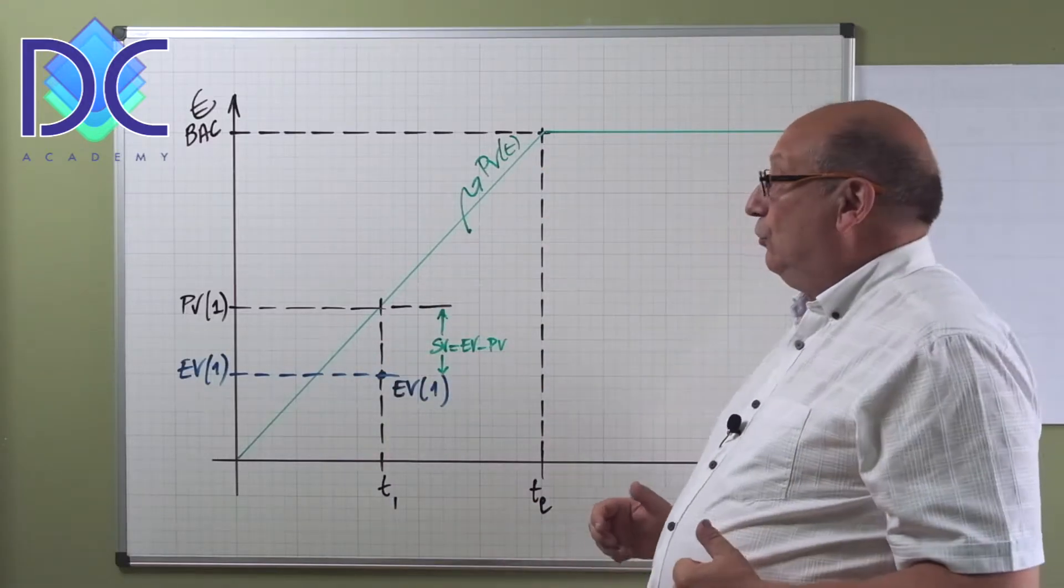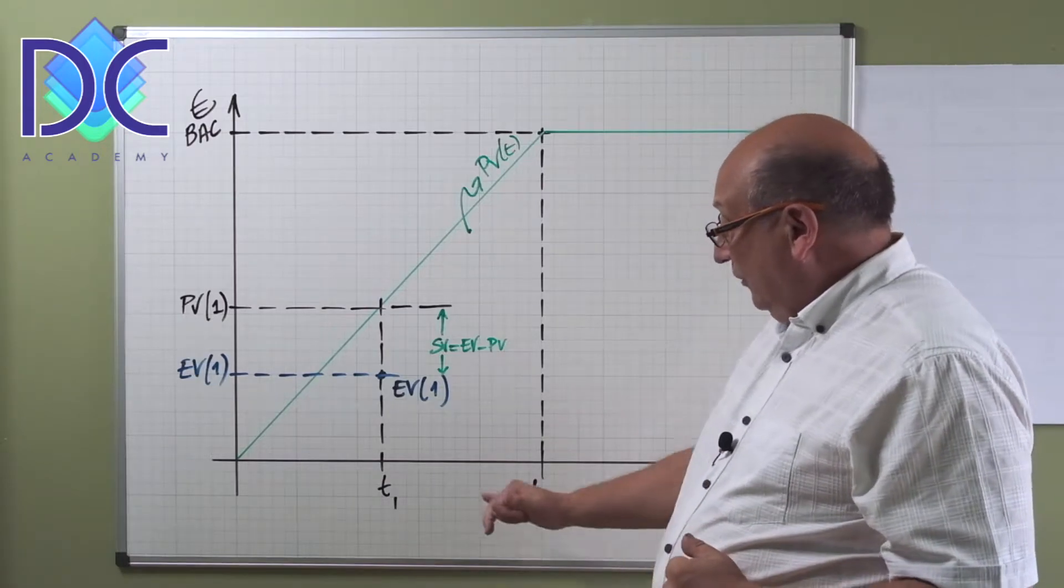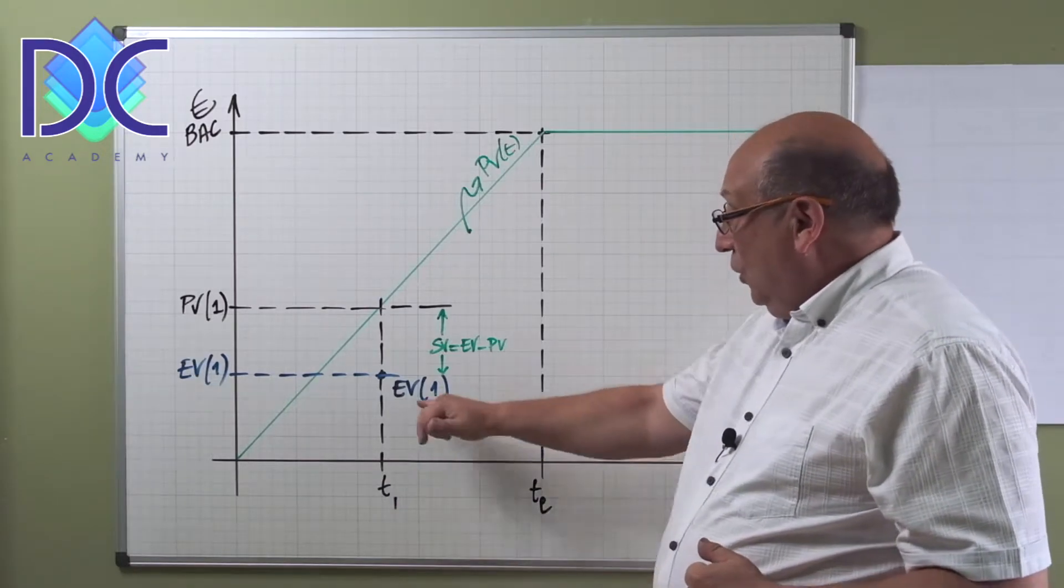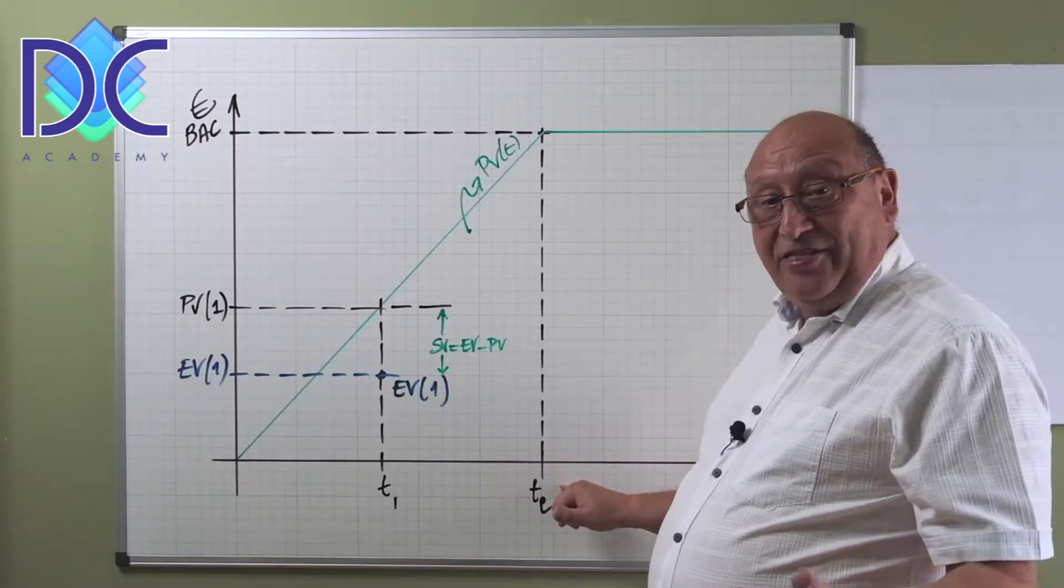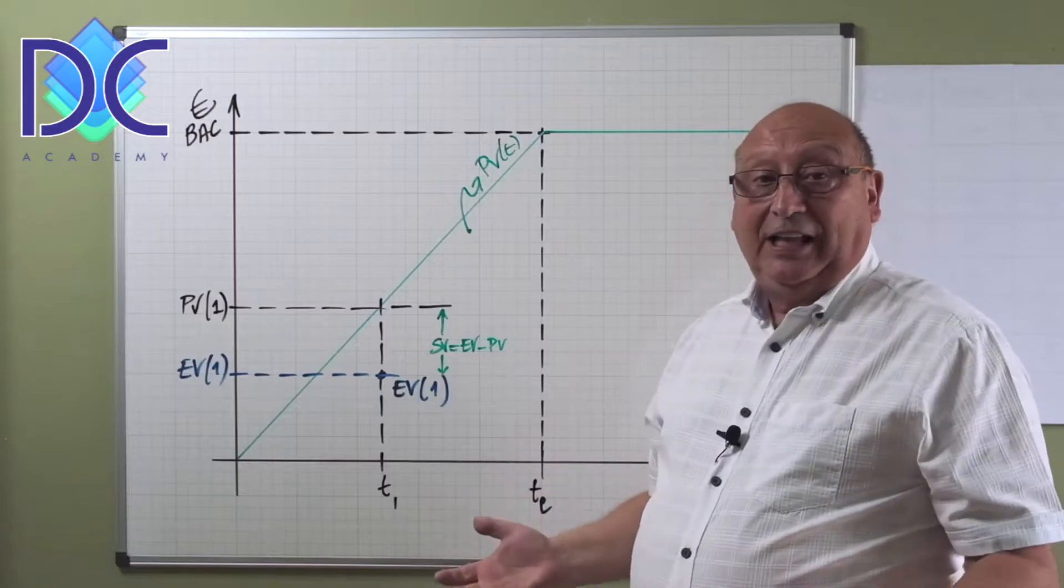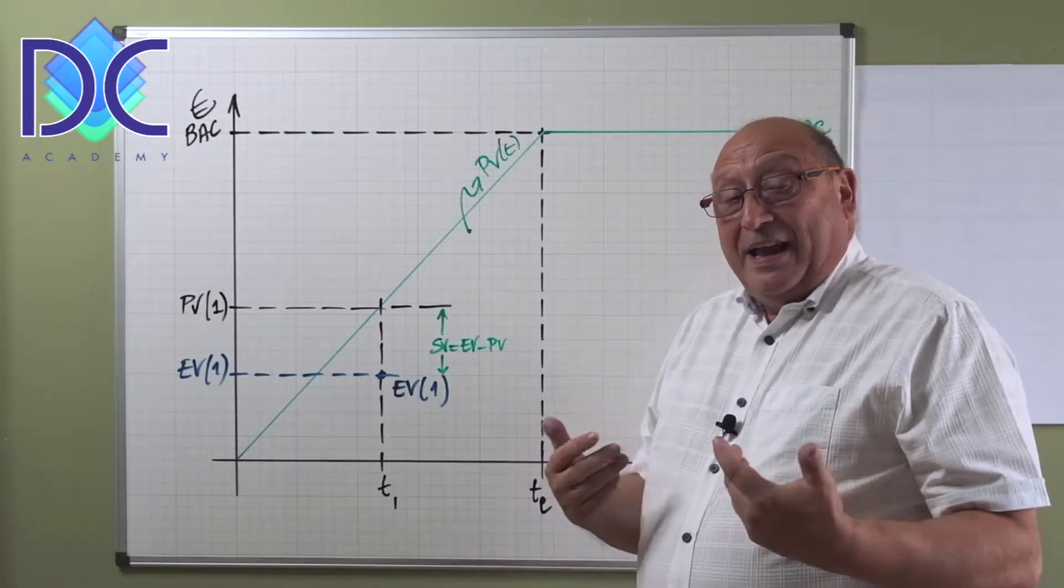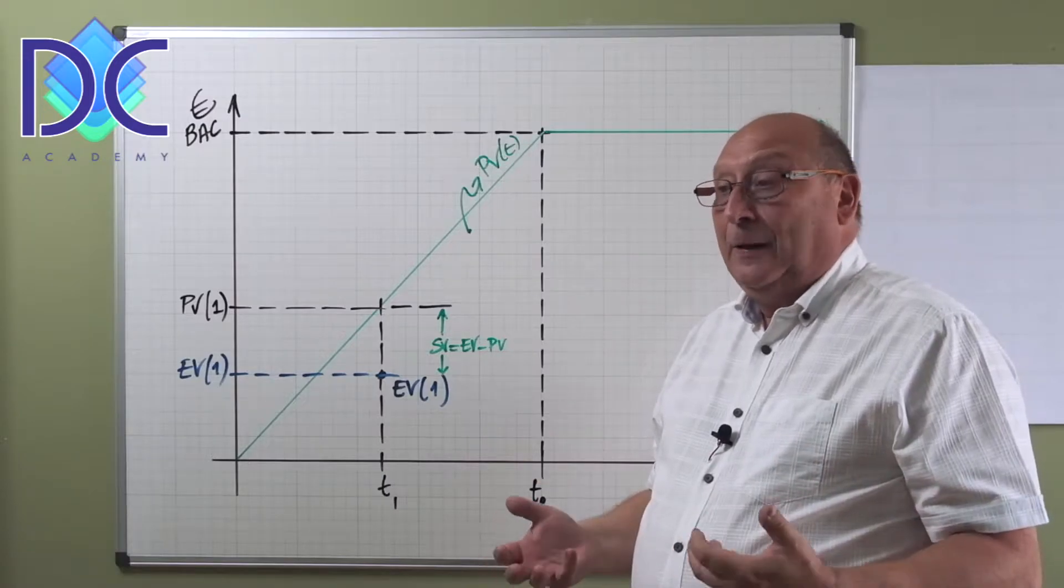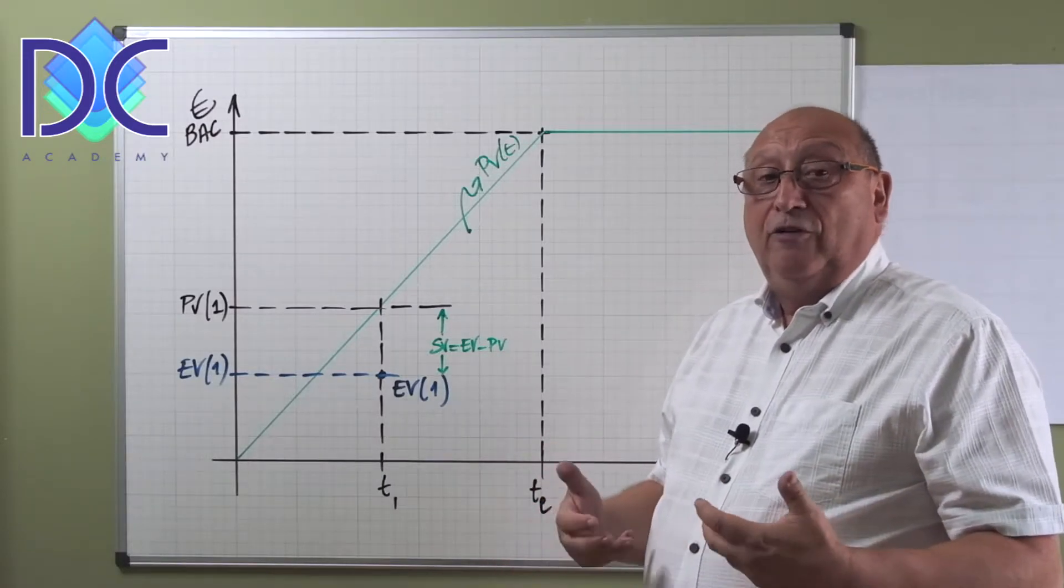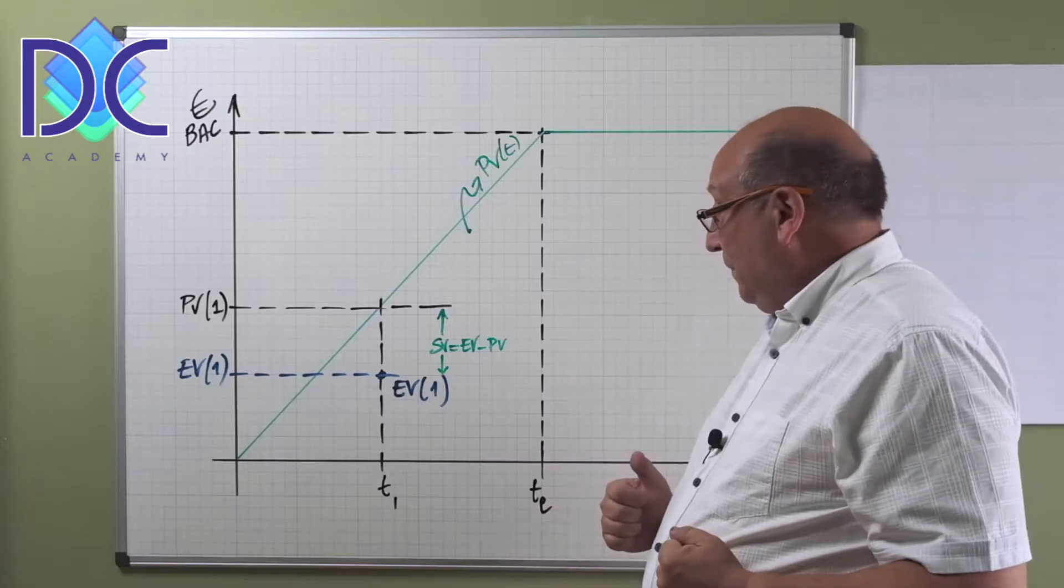We have our S-curve. You know I prefer a line here, it's easy to draw. We have at a certain time t1 a certain plan value. We have the end time of the project where we reach the budget at completion. Basically all the work is done there.